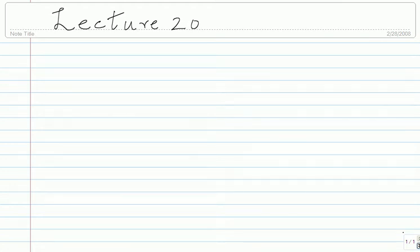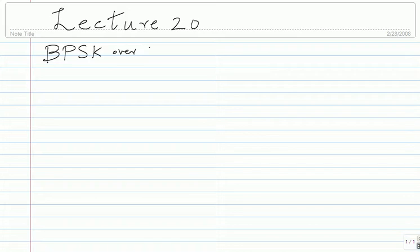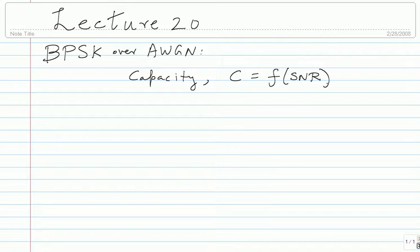This is lecture 20. The last thing we were seeing were things like coding gain and capacity. I'm not sure if that sunk in very well, but it's not too crucial in this course, though you should know there is such a notion. The crucial idea is that for BPSK over AWGN there is something called capacity, denoted C. It is some function of SNR. Capacity is a rate - since it's BPSK, capacity is going to be between 0 and 1. It's the rate at which you can transmit; C is a monotonically increasing function of SNR.